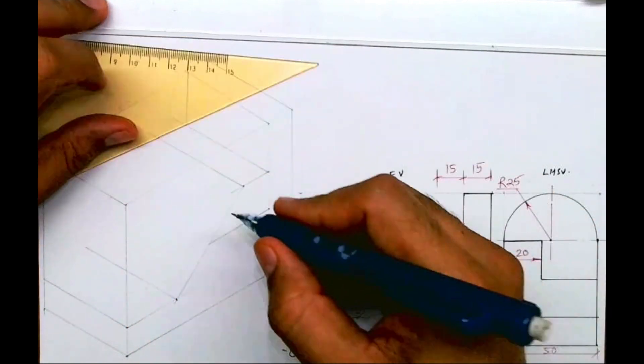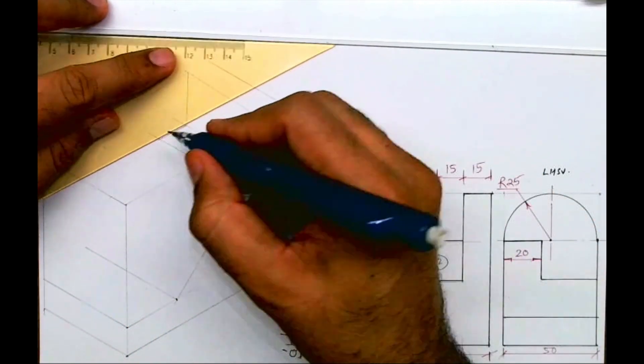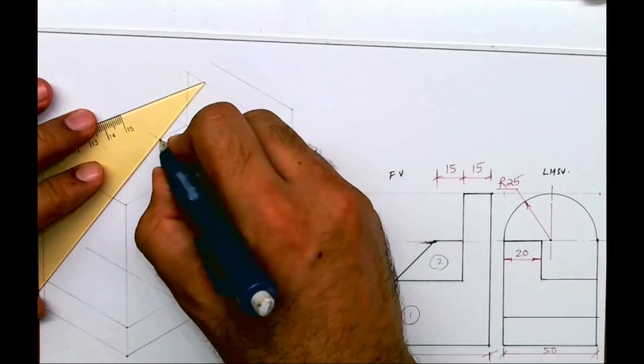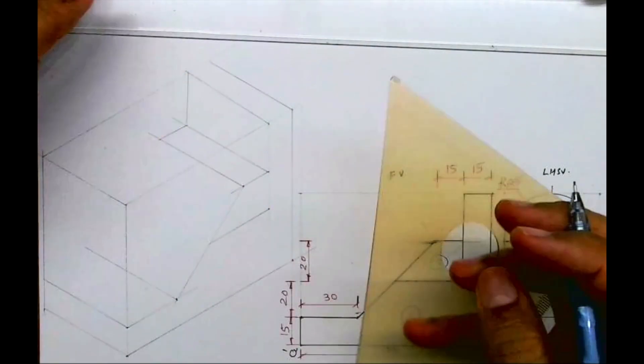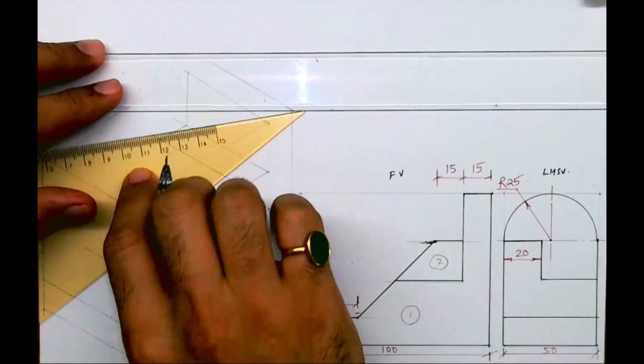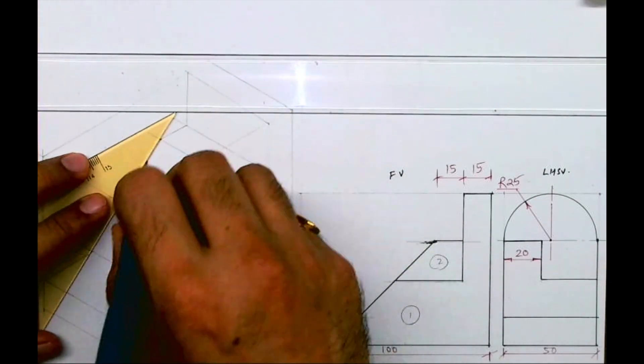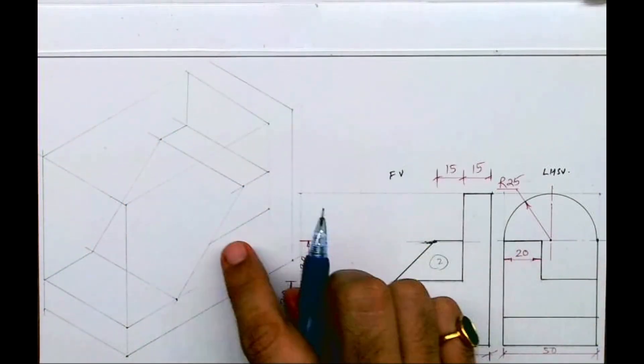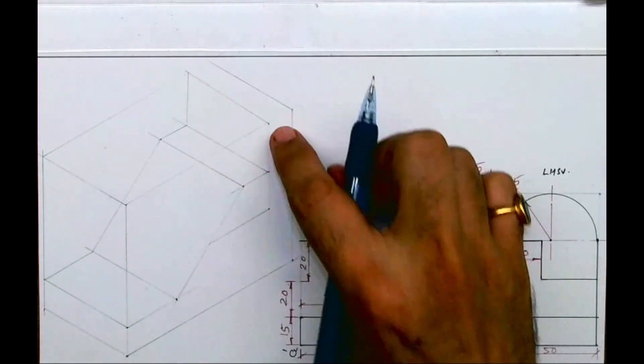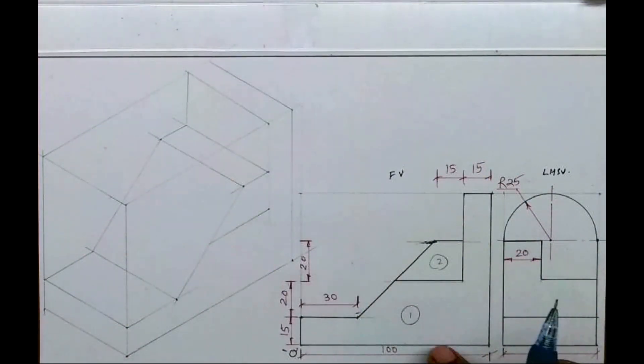You draw vertical line again, you draw line like this. See, from here also you draw line and you draw this slope. So we are done with this part one. Now this slope cuts the slope.